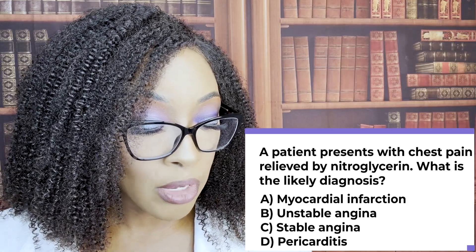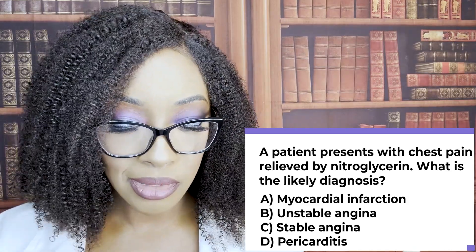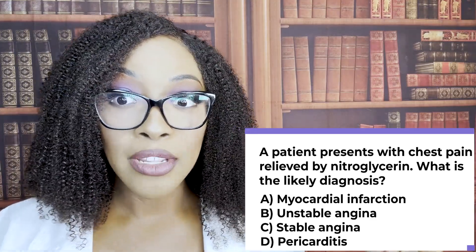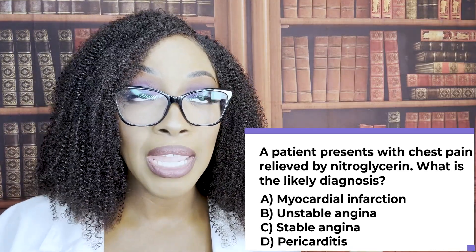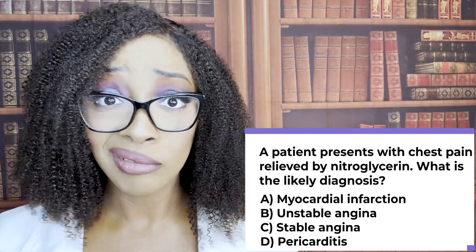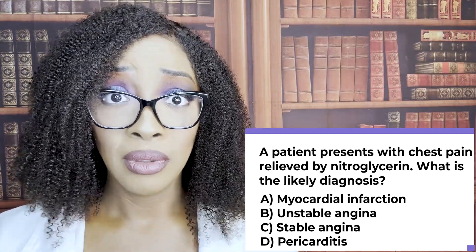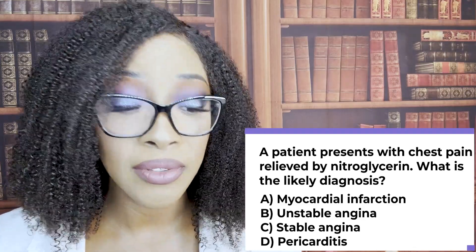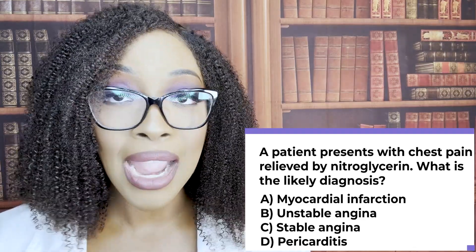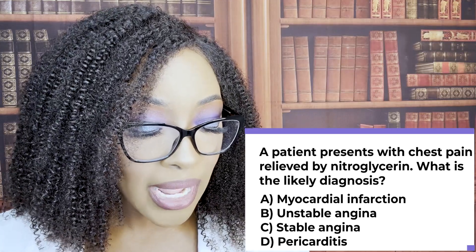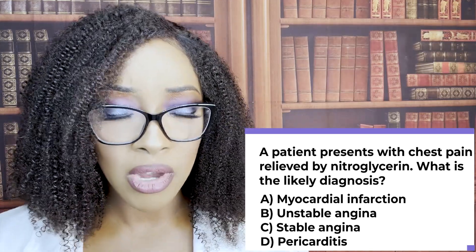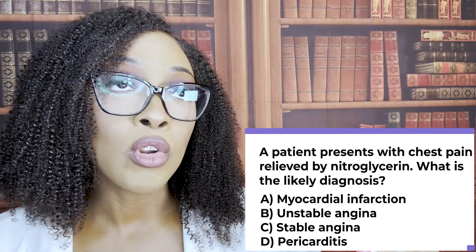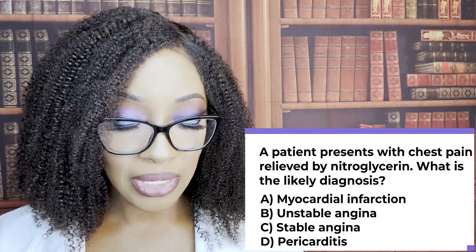Myocardial infarction is a heart attack. Unstable angina — unlike stable angina where it's predictable and stops with activity rest — unstable angina is not predictable: they don't know what will trigger it, and stopping the activity doesn't relieve it. It's also not relieved by nitro. Pericarditis is inflammation of the pericardium, and importantly, it gets worse when the patient lies down.